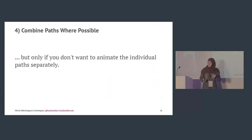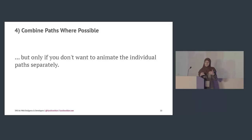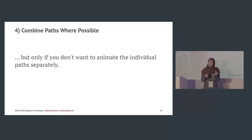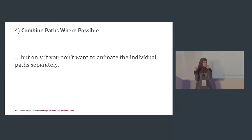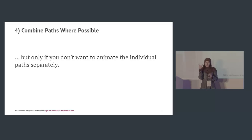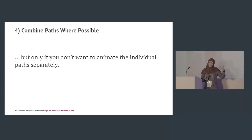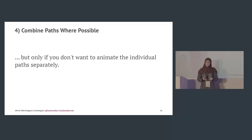Combine paths where possible, but only if you don't want to animate the individual paths separately. A lot of icon services combine paths even when it's not always recommended. For example, if you have a trash can with a cover and body, and you want to animate the cover, if the paths are combined you only have one element to animate. Combining makes file size smaller, but if you're going to animate, don't do it.